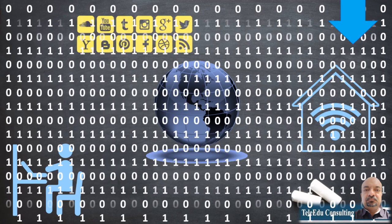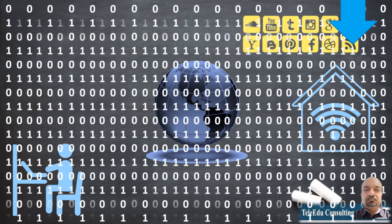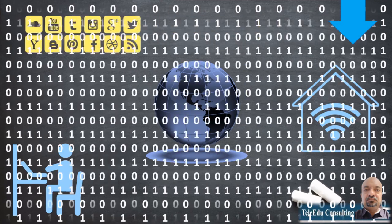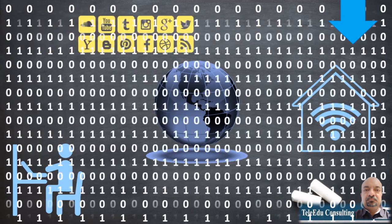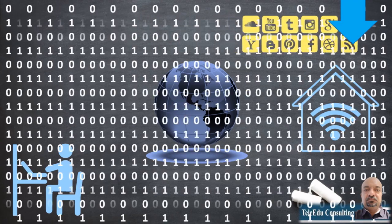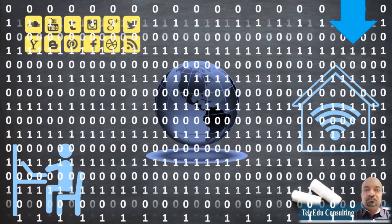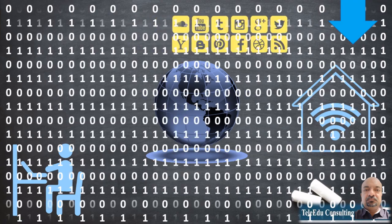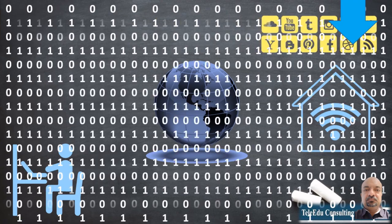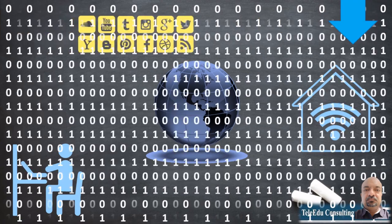We are surrounded by bits and bytes; we are living in a digital world with tons of bits and bytes. They consist of just 1s and 0s in enormous combinations. The entire internet, which is a galaxy of sorts in itself, works on 1s and 0s. It's truly interesting and fascinating.